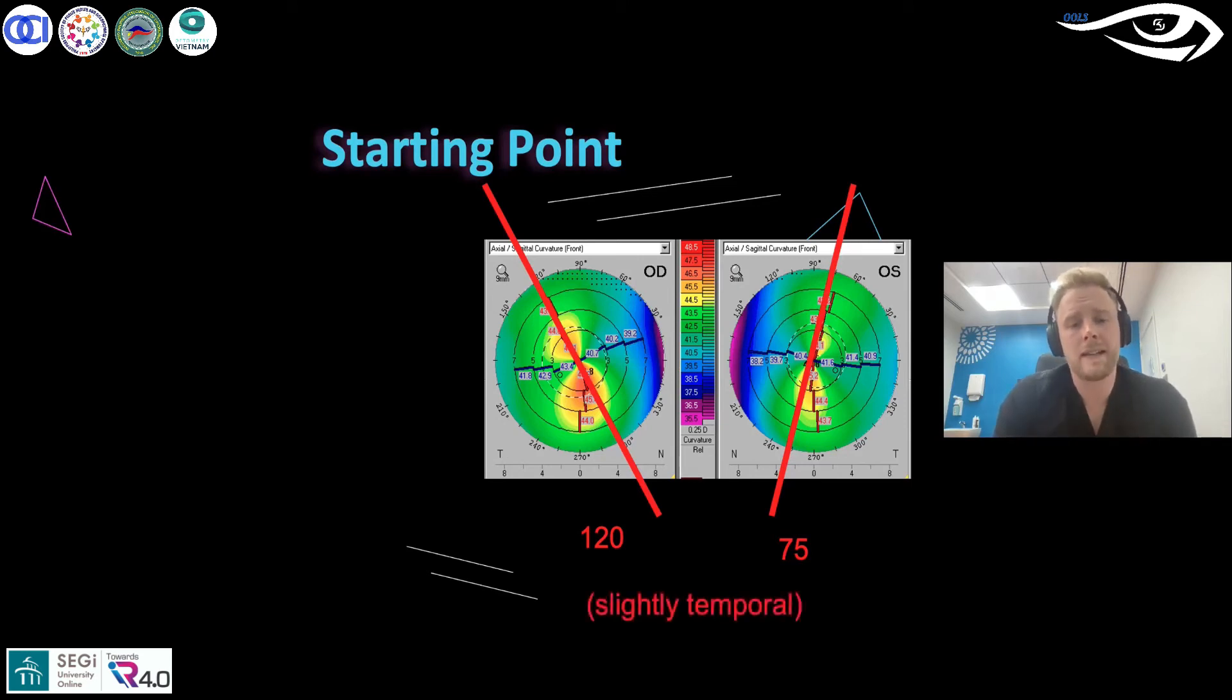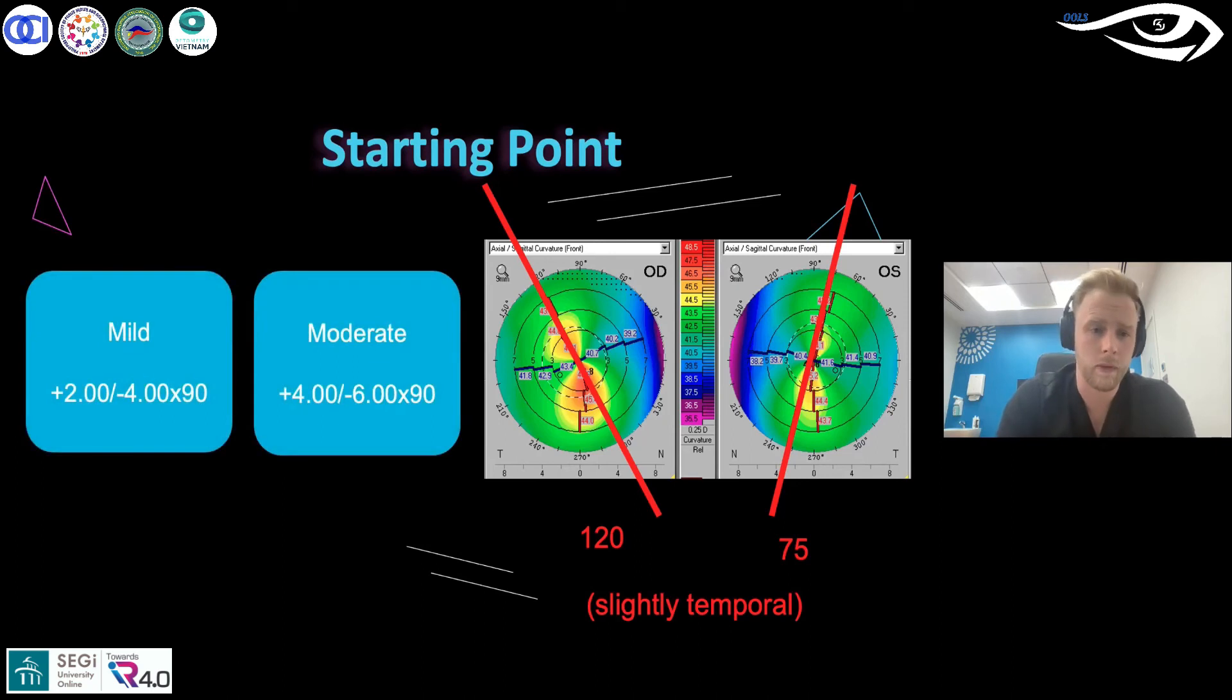Generally what you expect is a cylinder that's slightly temporal, and that tends to be what you find with keratoconus. If with your retinoscopy or your autorefractor you cannot find a starting point at all, I would suggest these as your starting points.